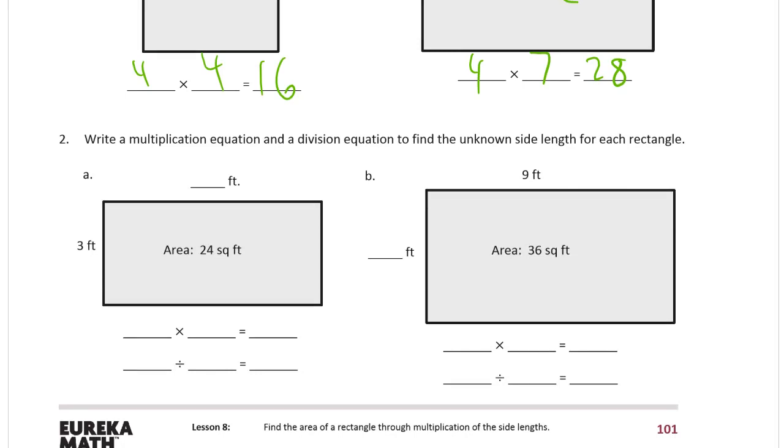And this one, we know the area, so that would be the product of a multiplication equation. But it's also the dividend in a division equation. Since we know the 24 and we know our divisor 3, then we can figure out our quotient is 8. Or think of it as a missing factor multiplication equation. We know one side is 3 and the product is 24, but we have to figure out what the missing factor is. It takes 8 threes to make 24, so that has to be 8 feet.